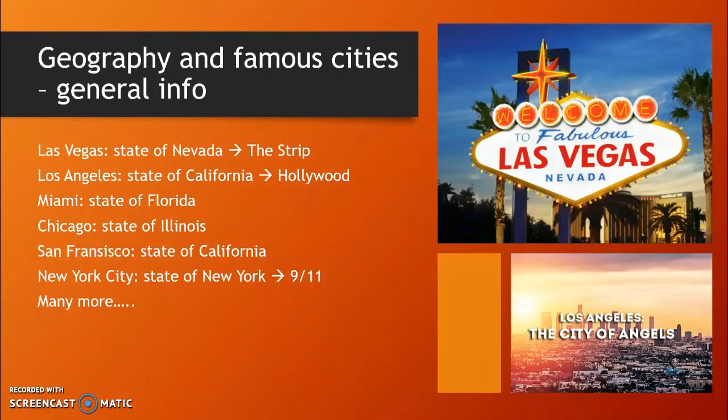Gambling is a large part of the Las Vegas income, but outside the Strip people just work in regular jobs like anywhere else. Los Angeles is sometimes called the City of Angels, because its name is Spanish for 'the Angels.' It is also called the City of Dreams, because many people go there to become famous. However, only few succeed at that.